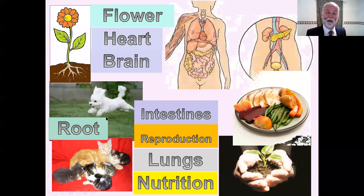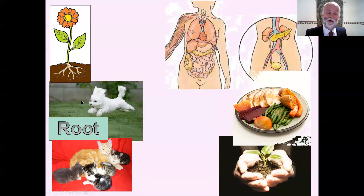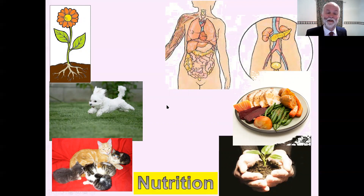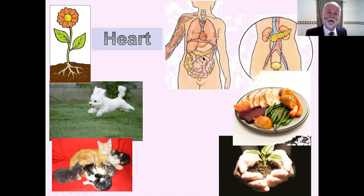Let's have a quick test. Have a look at those words and pictures and see if you can decide where things go. You might want to pause the video. The root is down at the bottom — it joins the plant to the soil and picks up goodness. The brain is up here in our head, nicely protected by the skull. Nutrition — there's our Sunday roast again. Nutrition is when we take stuff in to give us energy and materials to grow. The heart's in your chest, just on the left — it pumps your blood around your body.